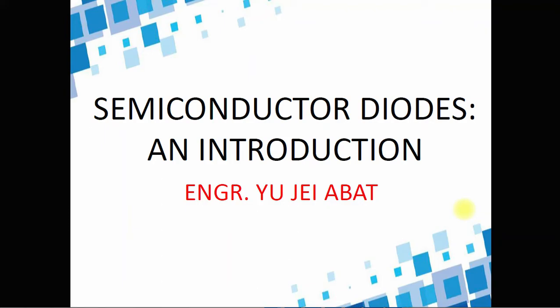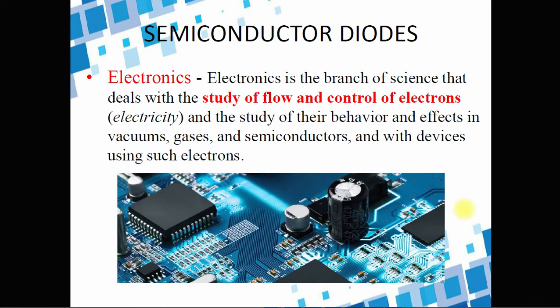For today we're going to talk about semiconductor diodes, an introduction all about semiconductors. Electronics is the branch of science that deals with the study of flow and control of electrons. When we say electronics, we are dealing with how we are going to limit the flow of electrons, which means current. That's the reason why many electronic gadgets operate on a very small amount of current, because they are capable of controlling and limiting the flow of electrons.